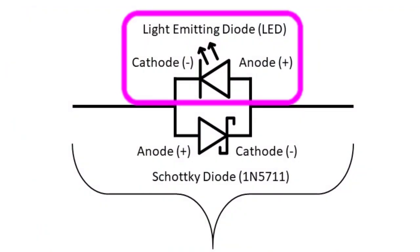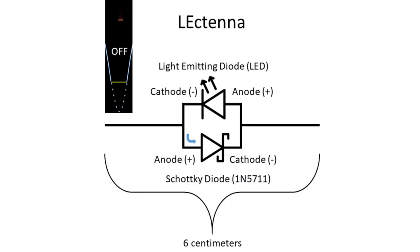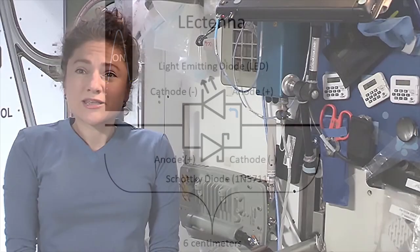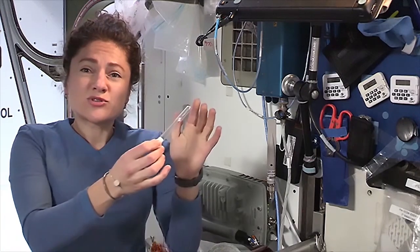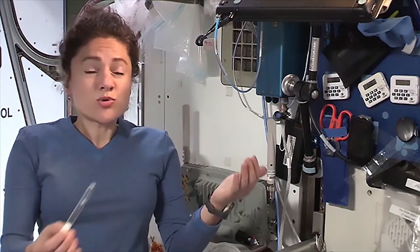It's made up of an LED paired with a component called the Schottky diode. These are both diodes, electrical components that only allow current flow in one direction. Here, we've oriented them to allow current to flow in a loop through the two diodes.